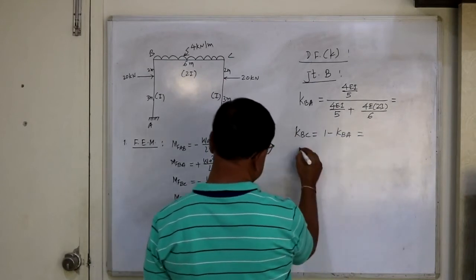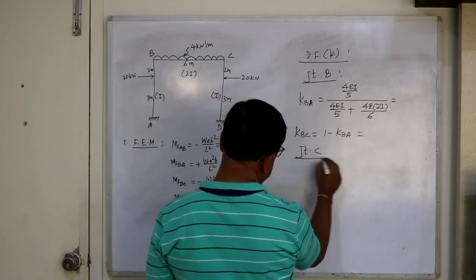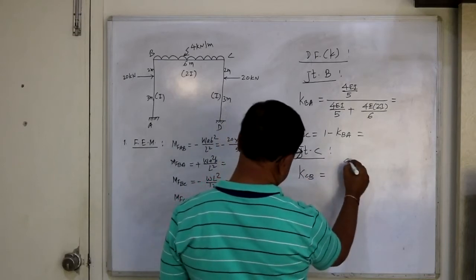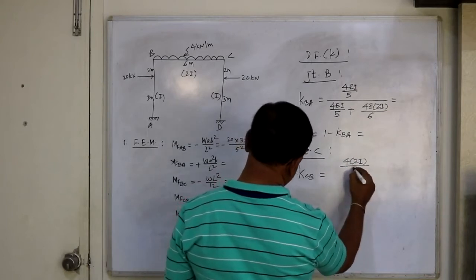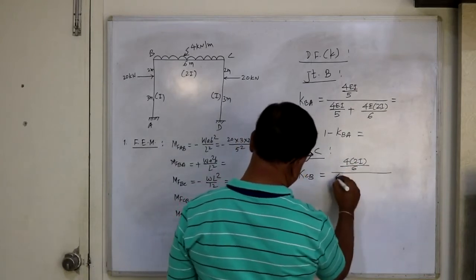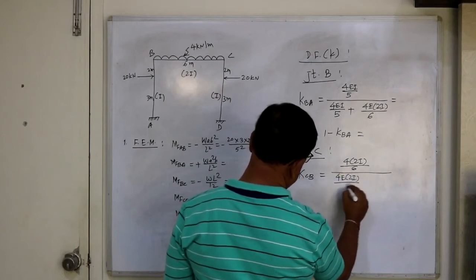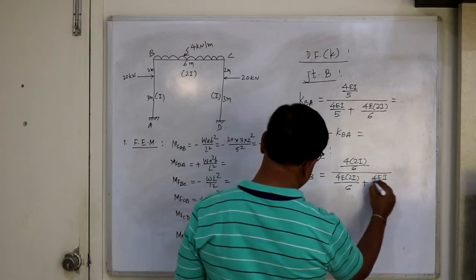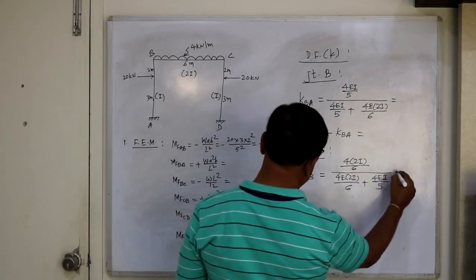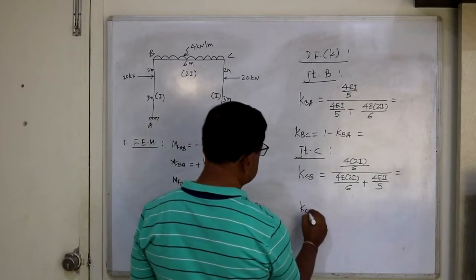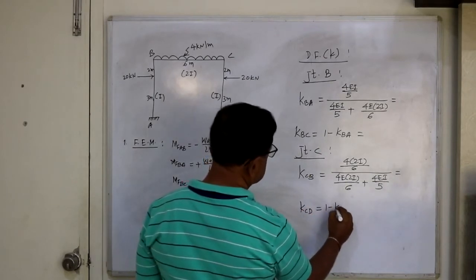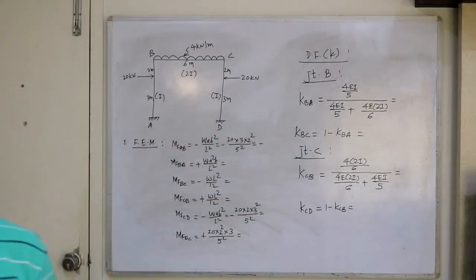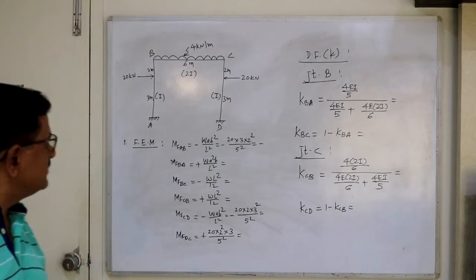For joint C: K_CB = stiffness of CB = 4E(2I)/6 divided by [4E(2I)/6 + 4EI/5], since D is fixed. Then K_CD = 1 − K_CB. Calculate all these distribution factors.